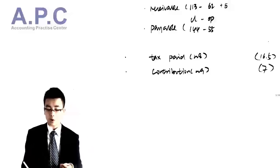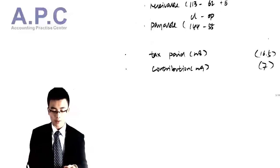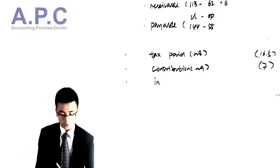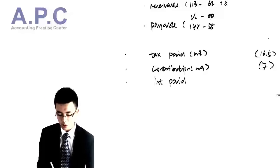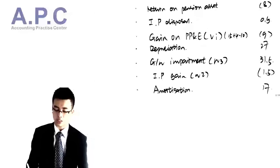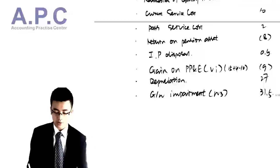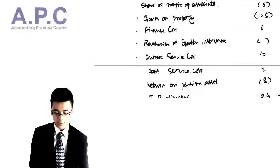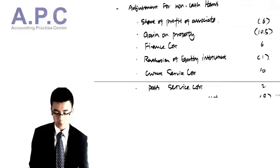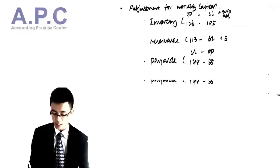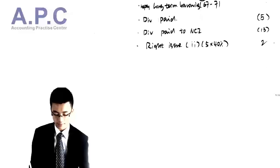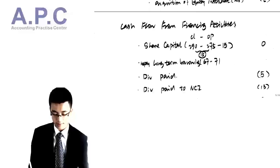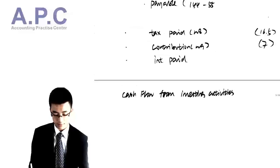For the interest payment — we are not told of any accrued expenses, so the interest payment is the same as the finance cost of 6. Very straightforward.